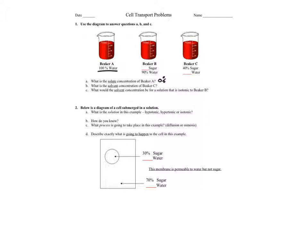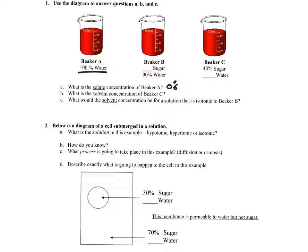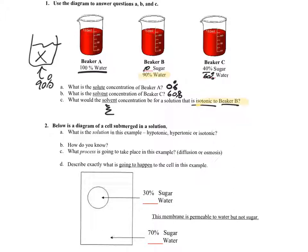What is the solvent concentration of beaker C? That's right — 60. These are simple calculation questions you should be able to do off the top of your head. If something is 40% sugar, it has to be 60% water. If it's 100% water, it has to be 0% solute, etc.